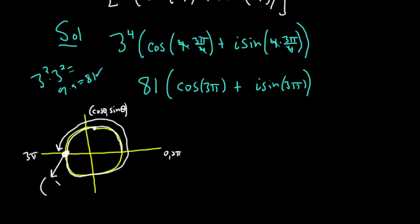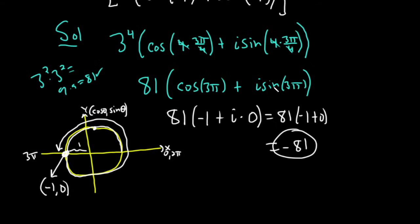Well, because it's the unit circle, this distance here is one. So the x coordinate is negative one. And you can see here we're on the x axis. Cosine is the x coordinate on the unit circle, so cosine of three pi would be negative one because that's the x coordinate. This is 81 times negative one plus i times, and then sine of three pi would be the y coordinate at three pi, which is zero. So this is zero. So we get 81 times negative one plus zero, and so we get the answer of negative 81, which is really nice.